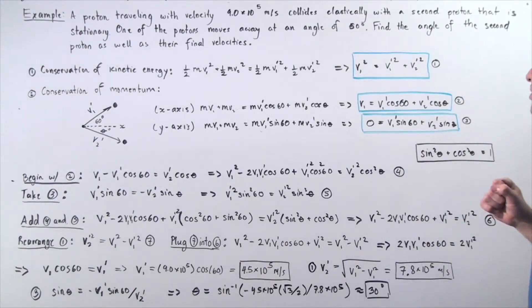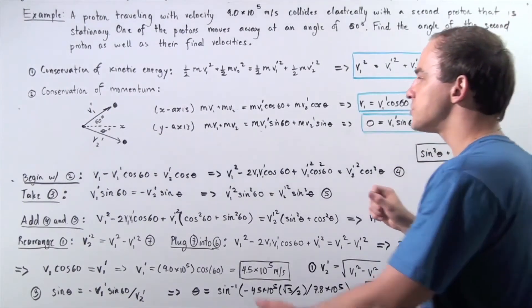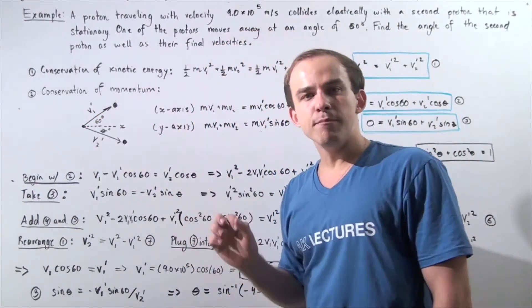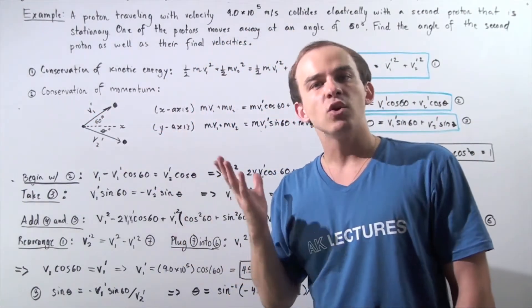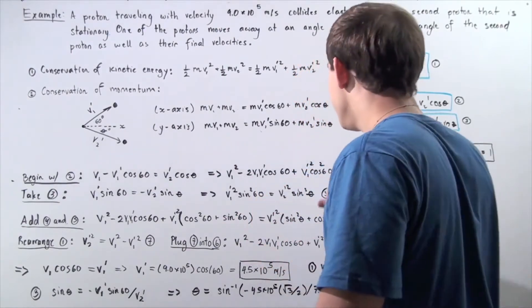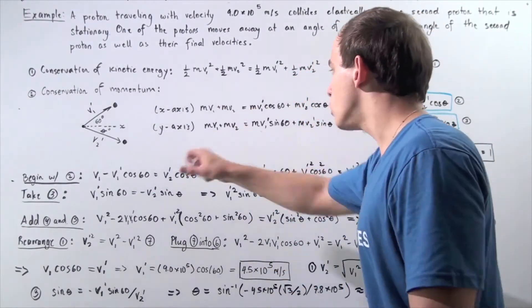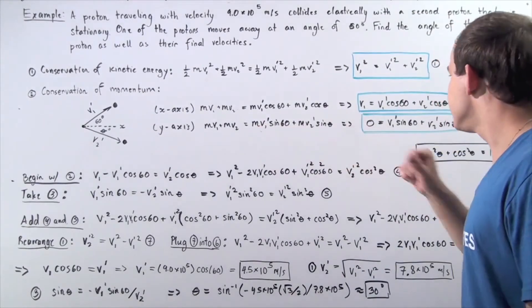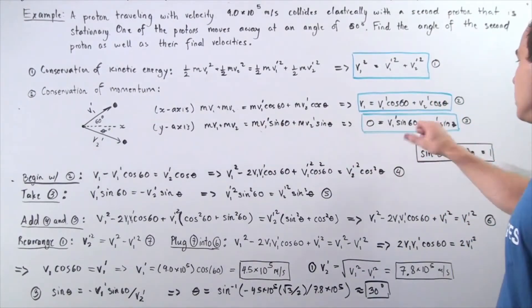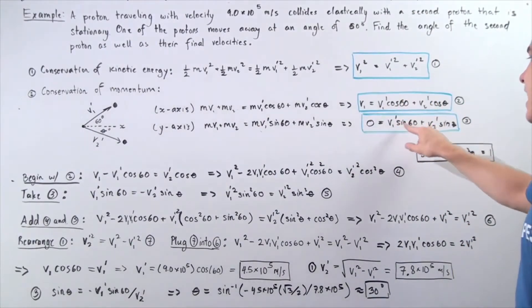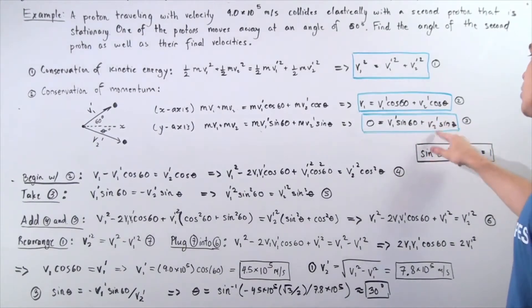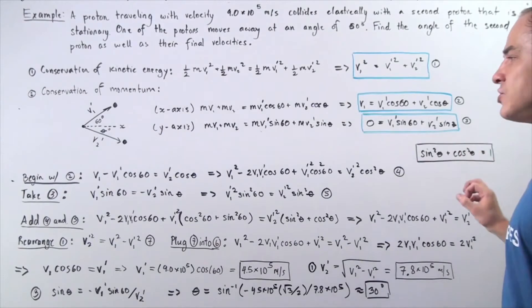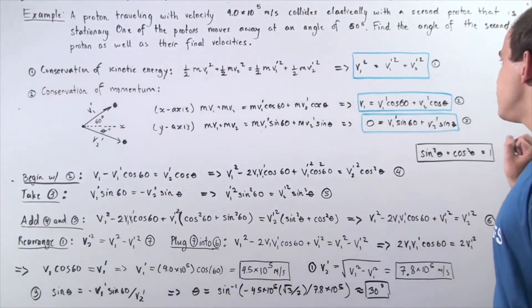For the y-axis, neither object is moving along the y-axis before the collision, so both initial terms go to zero. The m's cancel, and we're left with: 0 equals V1 prime sine 60 plus V2 prime sine theta. Let's call this equation 3.